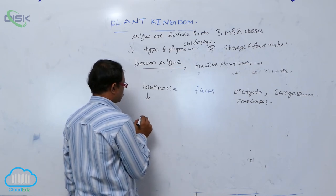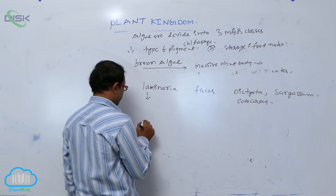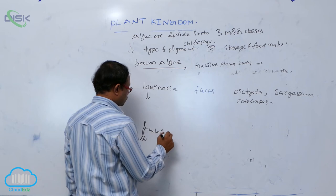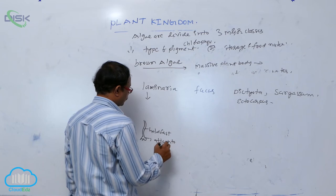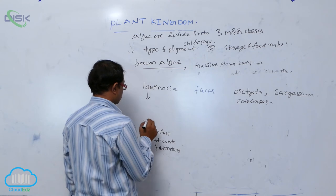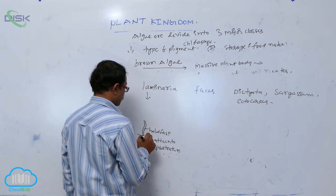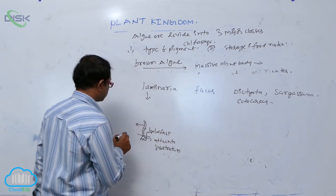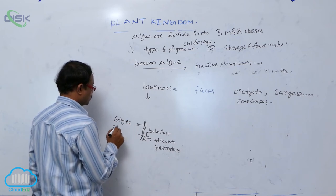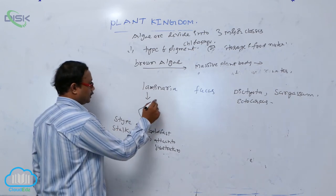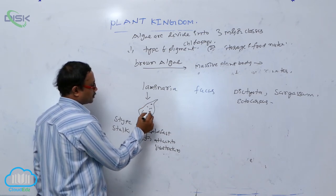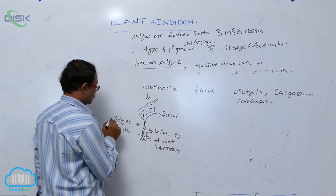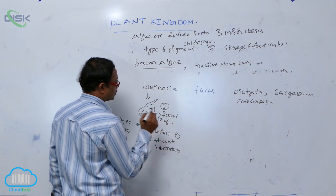Laminaria has mainly three parts. Below is the holdfast, which is used for attachment to the substratum. Above the holdfast is a stalk-like structure known as the stipe. Above the stipe is a leaf-like structure known as the frond, which performs photosynthesis. So the three parts are: holdfast, stipe, and frond.